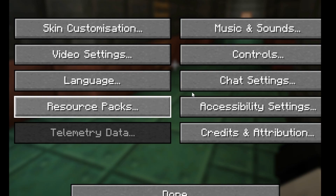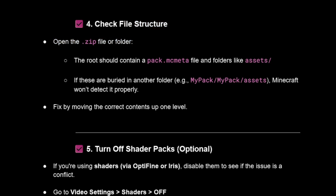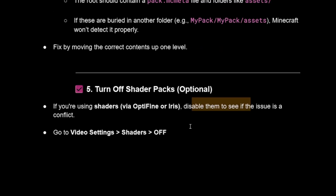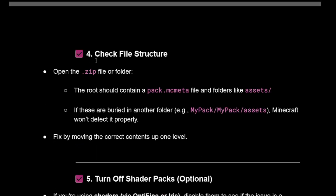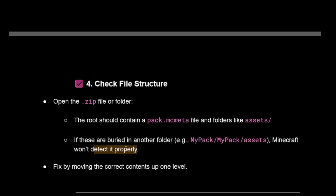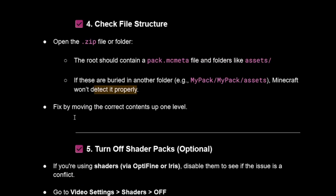The last options are to turn off shader packs and to check the file structure. If you're using shaders, disable them to see if the issue is a conflict or graphics-related — go to Video Settings > Shaders and turn them off. For file structure, open the zip file and make sure the root contains a pack.mcmeta file and an assets folder. If they are buried inside another folder, Minecraft won't detect the pack properly.